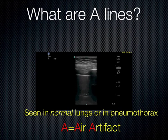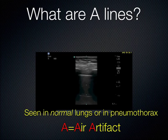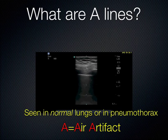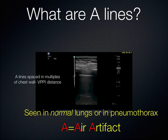Occasionally that resonance reaches back to the probe, and the probe interprets it as a signal from something deeper. You will see these repetitive horizontal artifacts. You'll also notice that A lines are spaced equidistant — the distance from the chest wall down to the VPPI is the spacing you'll see. If you increase the depth, that spacing remains consistent throughout.